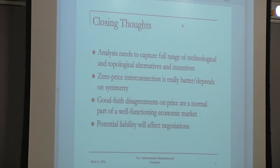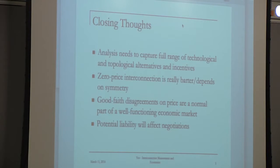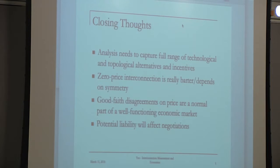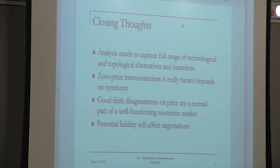A point I want to echo from Jason: zero-price interconnection is barter. It is an exchange of equal value — you have no compulsion to enter into a peering agreement, and you do this because it's a mutually beneficial exchange. Barter requires some notion of symmetry. We used to think about this purely in terms of traffic and nodes, but the industry is moving beyond that — ultimately it's symmetry of value. If someone radically changes the volume they're sending you through a different set of interconnection agreements, most actual peering contracts call for them to turn into transit contracts or for side payments, because once you're out of ratio, someone needs to start paying for the traffic — it's no longer a valid barter transaction.